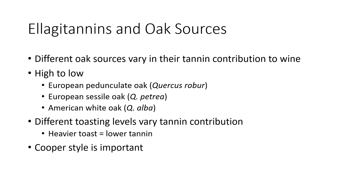Ellagitannins can vary with oak sources. Different oak sources vary in the level of tannin in the wood and what they contribute to the wine. Ranging from high to low: European pedunculate oak (Quercus robur), European sessile oak (Quercus petraea), and American white oak (Quercus alba). To make things more complicated, different toasting levels can vary the tannin contribution — a heavier toast means more tannin degradation and lower tannin in the finished wine. The cooper can be really important and may even have more impact than the original oak source.